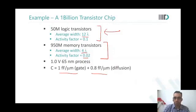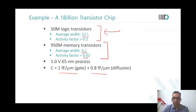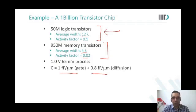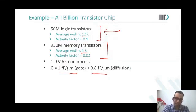The capacitance C in the model covers both gate and diffusion: gate is 1 fF/μm and diffusion is 0.8 fF/μm. Regarding lambda and 65nm: in advanced technologies lambda has lost strict significance, but roughly 2 lambda ≈ 65nm. A key point is that logic transistors are typically three times bigger than memory transistors — this is a realistic assumption.